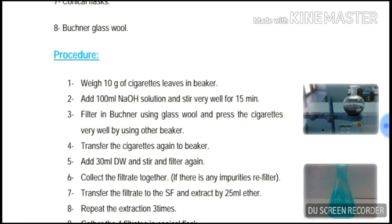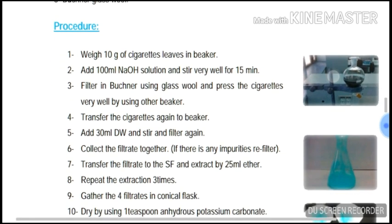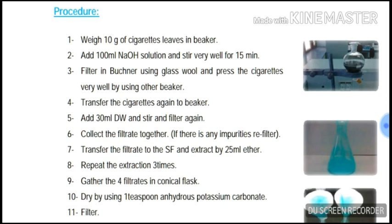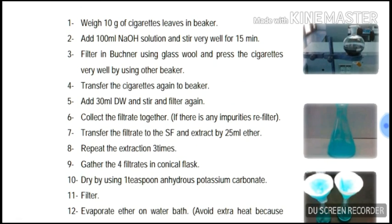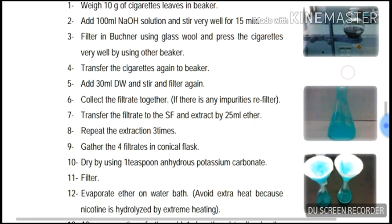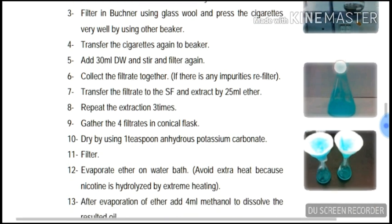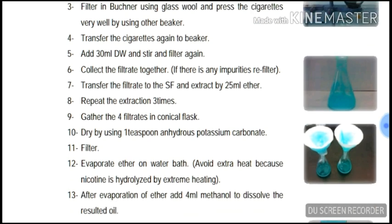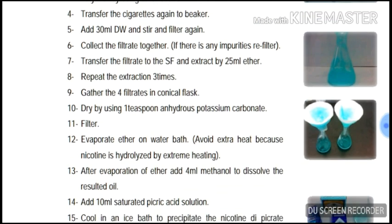Procedure: weigh 10 grams of cigarette leaves in a beaker, add 100 ml ammonia solution and stir very well for 50 minutes. Filter using glass wool and press the cigarettes very well using another beaker. Transfer the cigarette residue again to the beaker, add 30 ml distilled water, stir, and filter again.